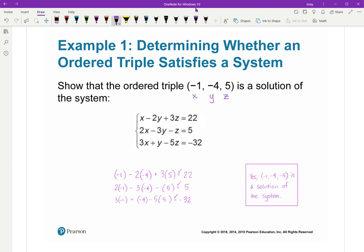3 times negative 1 plus negative 4 minus 5 times 5 is negative 32. So yes, negative 1, negative 4, positive 5, is a solution of the system.